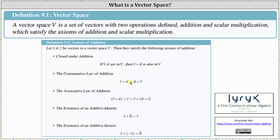Vector V plus vector W must equal vector W plus vector V. The associative law of addition: the sum of vector V and W, plus vector Z, must equal vector V plus the sum of vector W and vector Z. The existence of an additive identity indicates a zero vector must be in the vector space, such that vector V plus a zero vector equals vector V. The existence of an additive inverse means each vector in the set must have an opposite vector, such that vector V plus the opposite of vector V is equal to the zero vector.